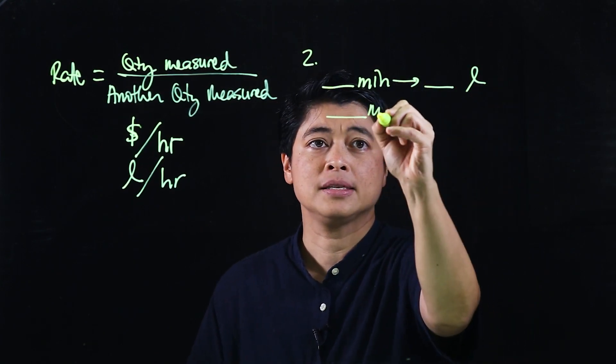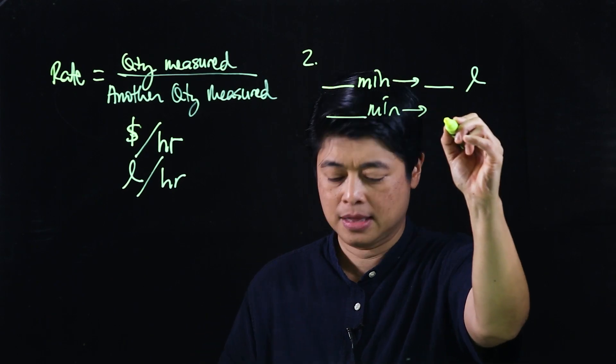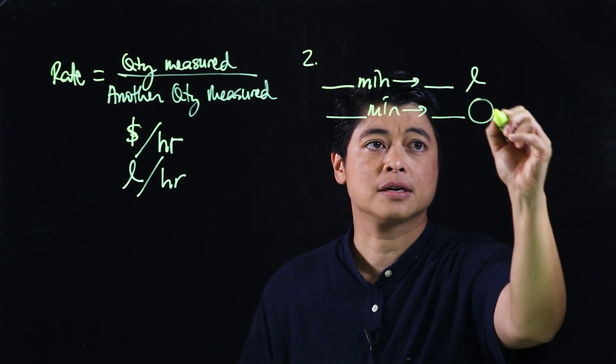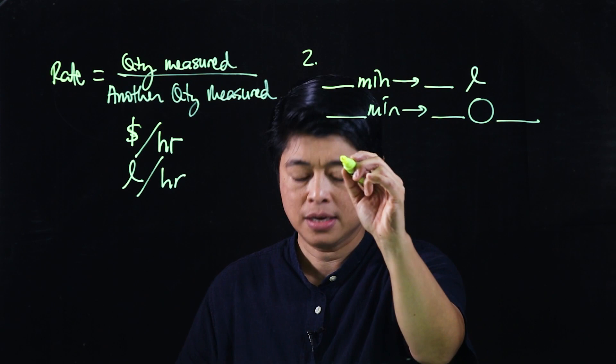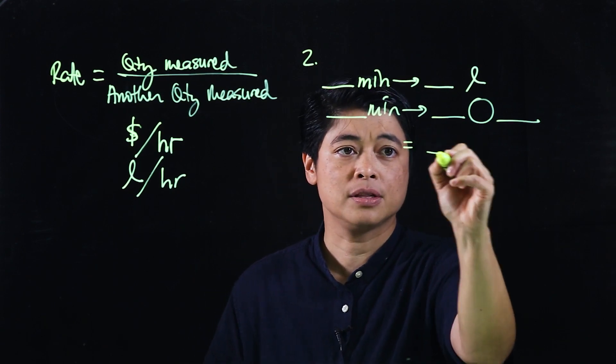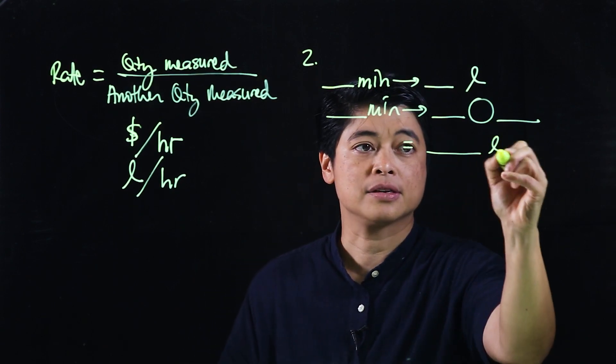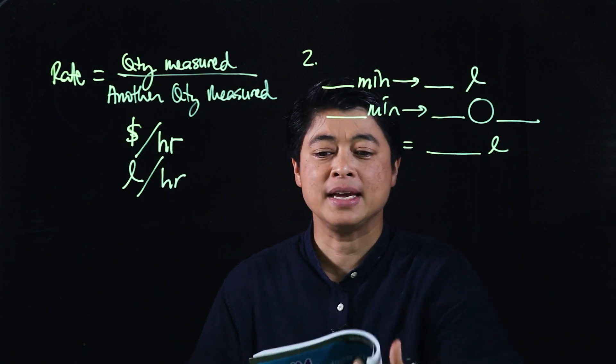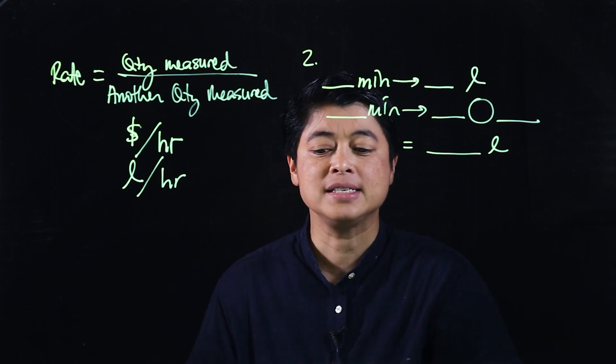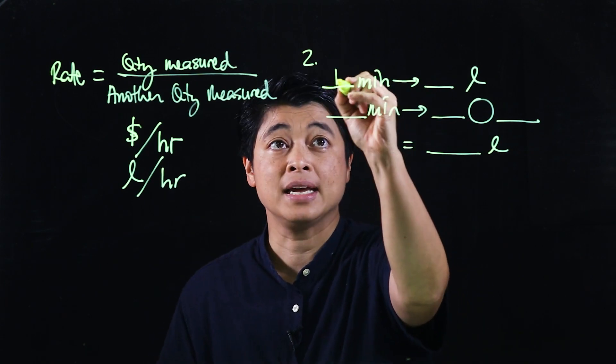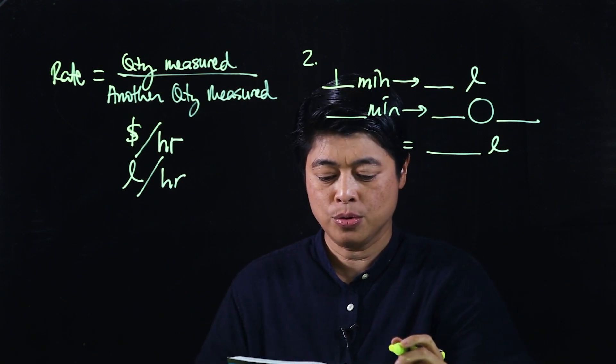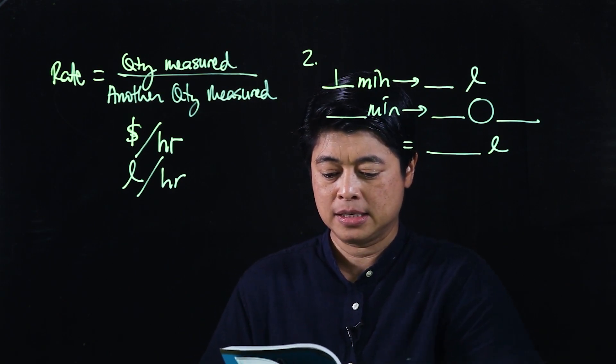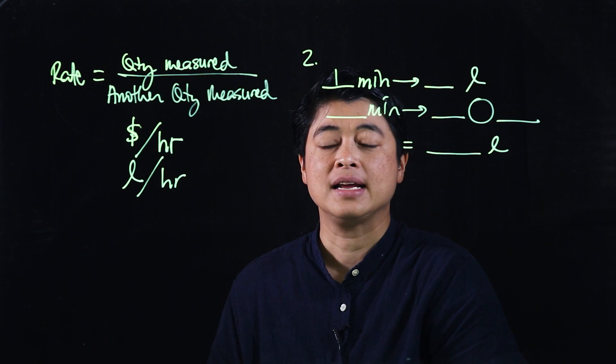Then blank minutes and then blank circle blank—so that's the operation—and then this is equal to blank liters. Which means we know that this is one minute is equal to one minute is equal to 50 liters.